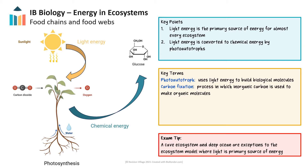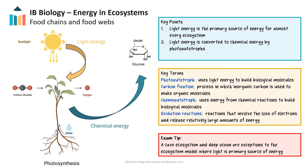While most ecosystems rely on this process, there are some unique cases where chemoautotrophs use chemical energy from oxidation reactions. Oxidation reactions are reactions where there is a loss of electrons from one or more atoms, releasing a relatively large amount of energy. This energy is captured to build biological molecules. Iron-oxidizing bacteria, for instance, are remarkable organisms that thrive on the large amount of chemical energy released in these oxidation reactions.